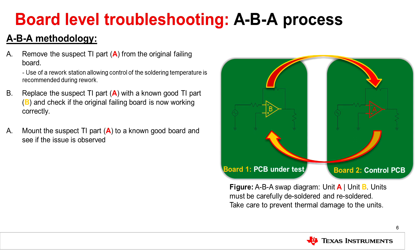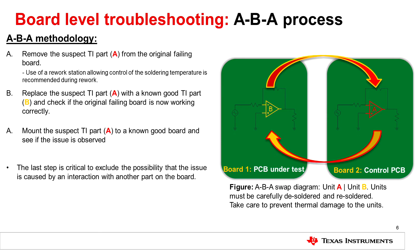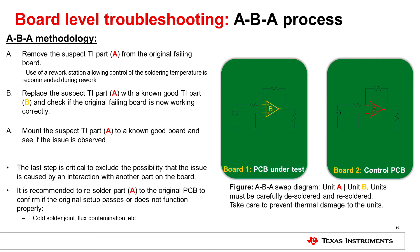Once mounted, mount the second device, device A, to the known good board and see if the issue is still observed. The last step is critical to the process and requires us to resolder device A to the original PCB to confirm if the original setup is now functioning as expected or not. This helps us confirm if the issue is related to a cold solder joint, flux contamination, or any other printed circuit board assembly anomaly.